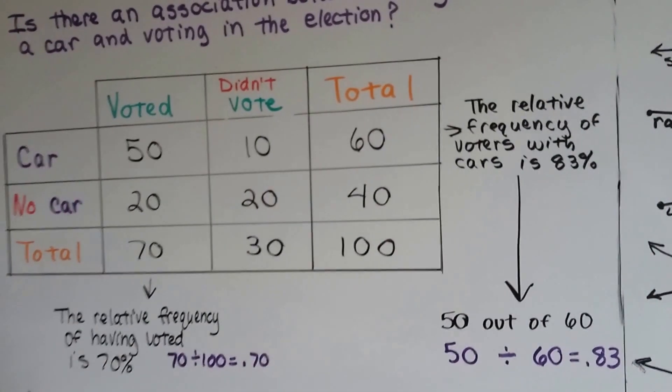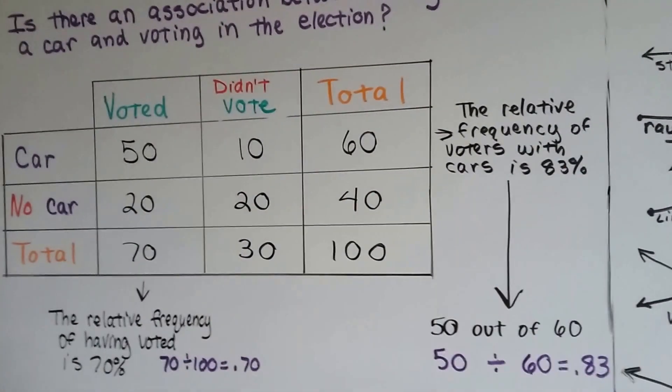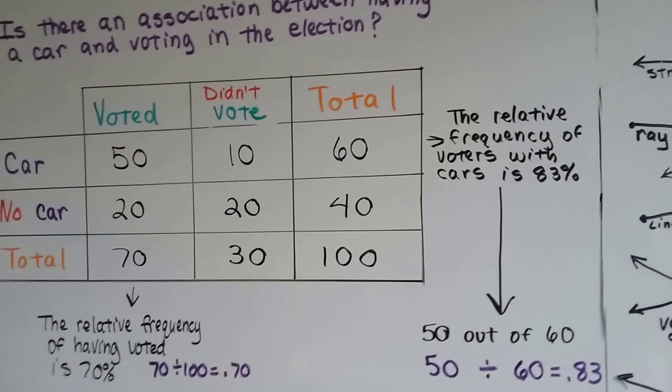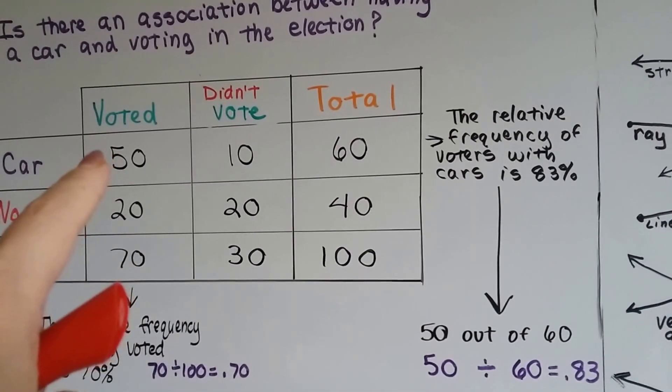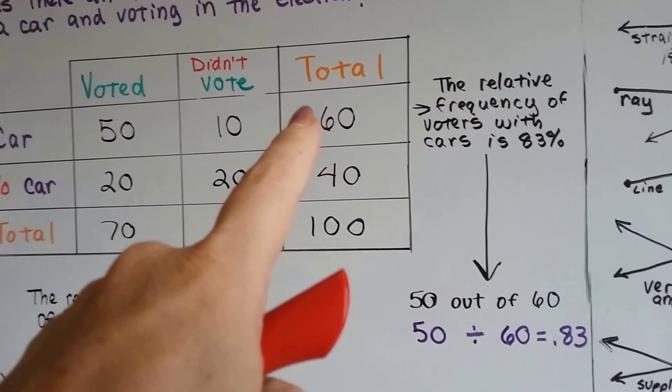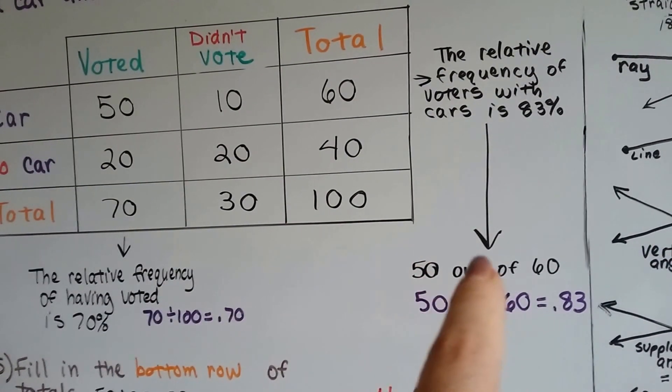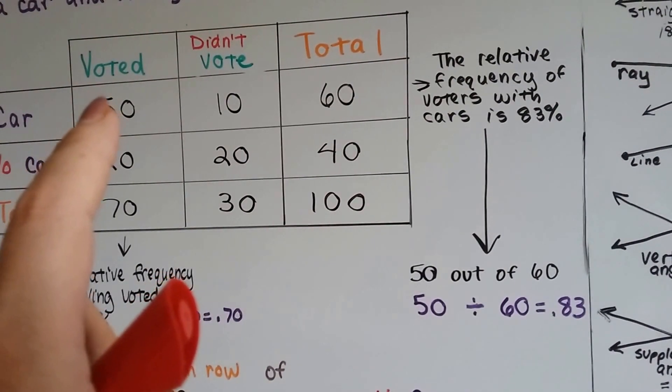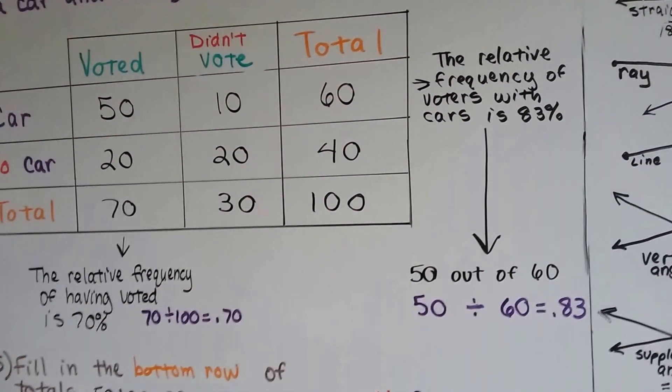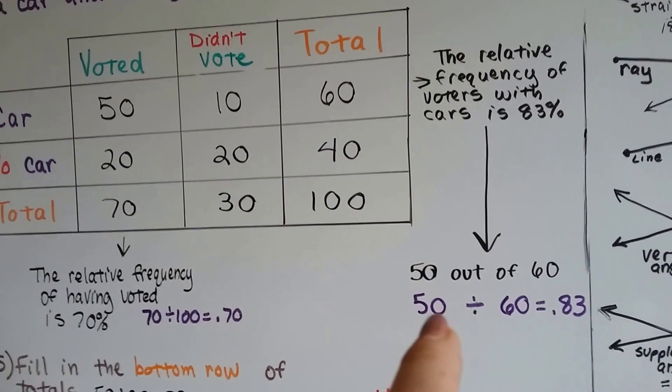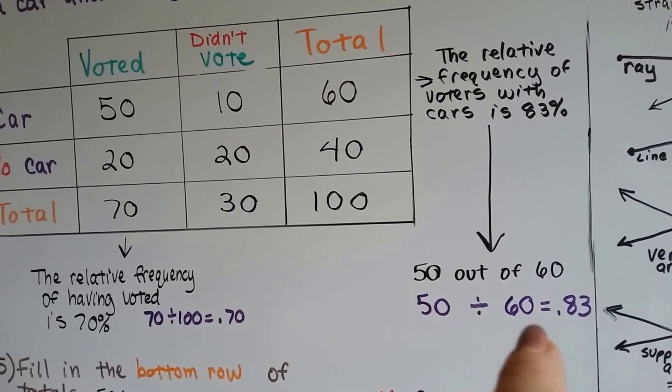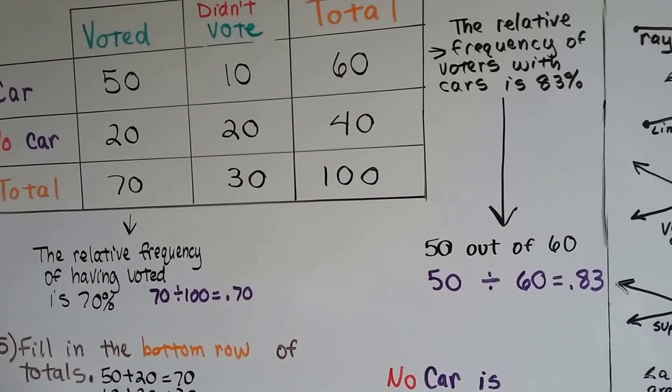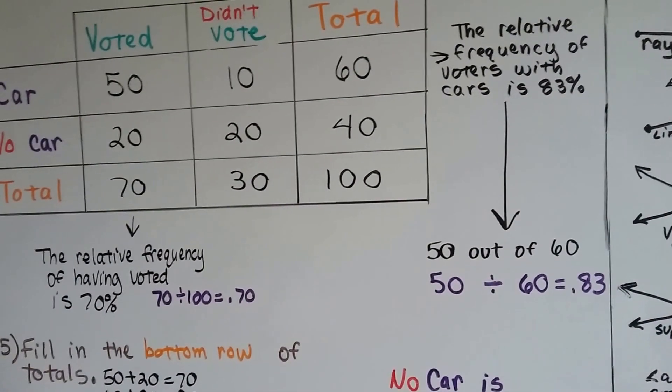The relative frequency of voters with cars is 83%. Now how did I get 83? There's no 83 on here. Cars is 50 that voted out of a total of 60, and that's 50 out of 60. 50 voted that had cars out of a total of 60 that had cars. Then I do the 50 divided by 60, and that equals 0.83 or 83 one hundredths or 83%.